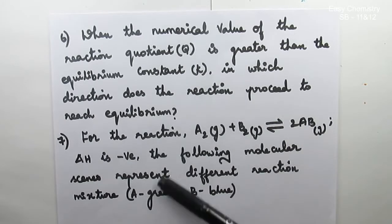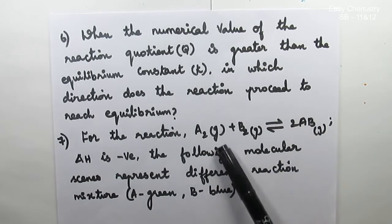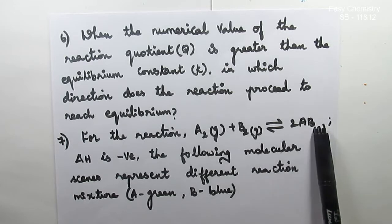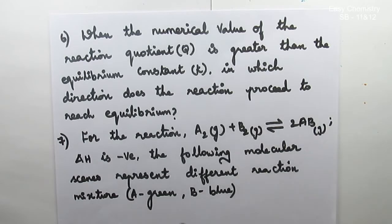Question number 7: For the reaction A2 gas plus B2 gas equilibrium 2AB, delta H is negative. The reaction is exothermic. The following molecular scenes represent different reaction mixtures, A is green, B is blue. If you want to see the answer, you will post this question.